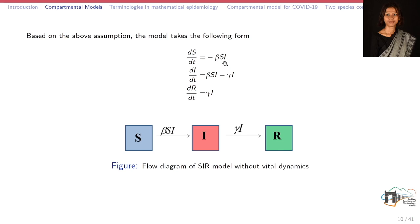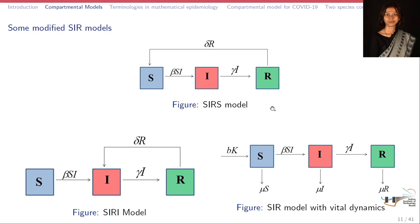Based on the above assumptions, the model that takes mathematical form is given here. Here dS/dt is equal to minus beta SI — the susceptible population enters the infected compartment at the rate of beta. dI/dt is beta SI minus gamma I — there is a growth of infected population due to interaction with susceptible populations, and at the rate of gamma, individuals in the infected class recover and go to the recovered class. The recovered class growth rate is gamma times I.